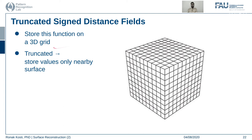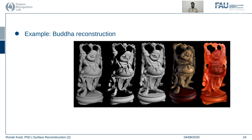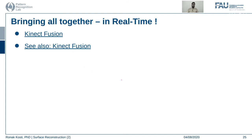We store this SDF function on a 3D grid, keeping only values nearby the surface. For each depth image from the Kinect or other depth sensor, we define a signed distance function in the neighborhood of that surface. If its value is already set we merge it; otherwise we smooth it out to remove noise, and finally reconstruct using the marching cubes algorithm. An example is the Buddha reconstruction — references to KinectFusion papers are provided for further reading.